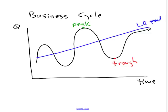A business cycle is just a fancy way of saying that over time, as this graph shows, Q, real output, sometimes is expanding in what we call a boom, and sometimes contracting in what we call a recession.